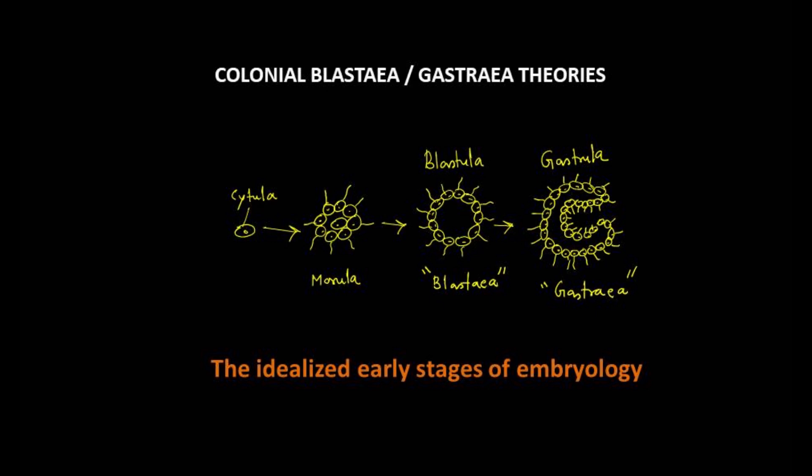Though there are many colonial flagellate protists, all the existing blastula-like types are unequivocally plants and all have incomplete separation of constituent cells with fine cytoplasmic bridges connecting the colony.